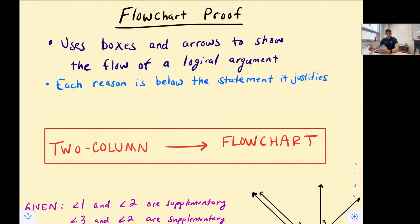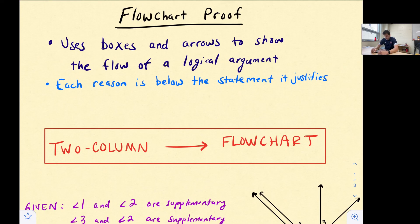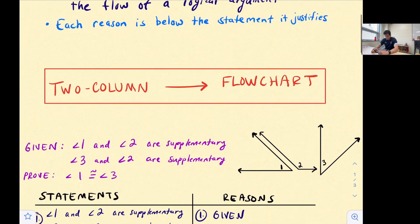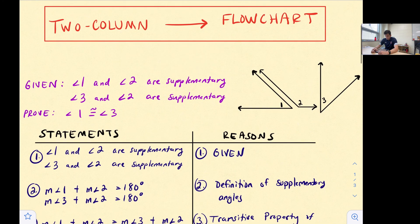Flowchart proofs are just another format for us to write a proof in. We've looked at a two-column proof, and now let's look at a flowchart proof. A flowchart proof looks like what it sounds like — we use boxes and arrows to show the flow of a logical argument. Instead of having statements on one side and reasons on the other as in our two-column proof, we have a reason below each statement. Today we're going to look at a two-column proof and convert it into a flowchart proof.